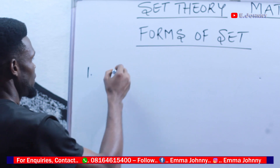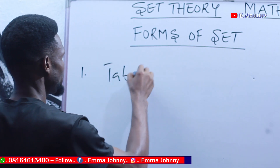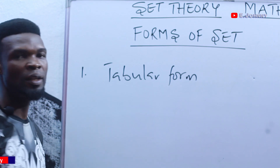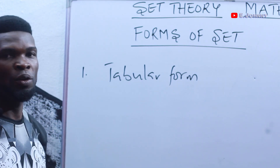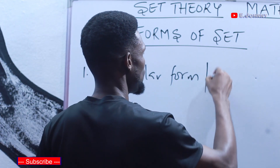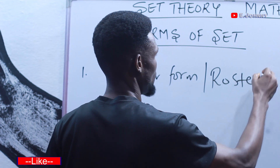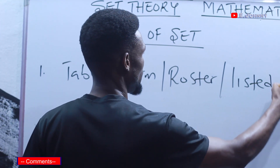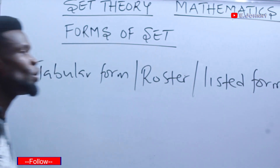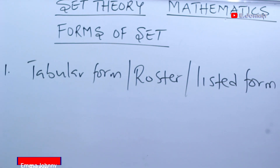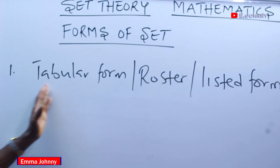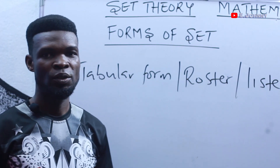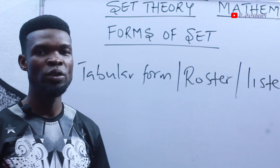The first way is tabular form. In case you don't hear 'tabular form,' we can also use the word 'roster form' or 'listed form.' Any of them mean one and the same thing. This is tabular form, or roster form, or listed form — that's the first form in which a set can be represented.